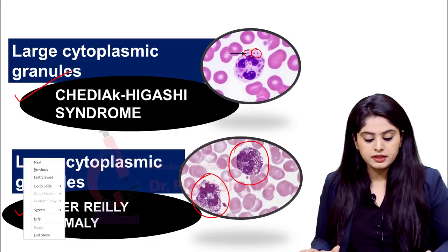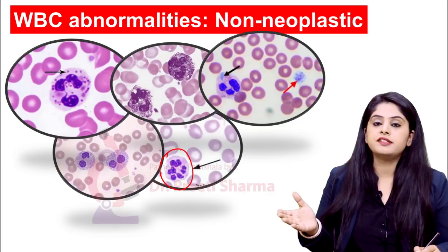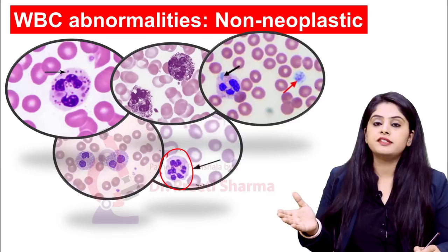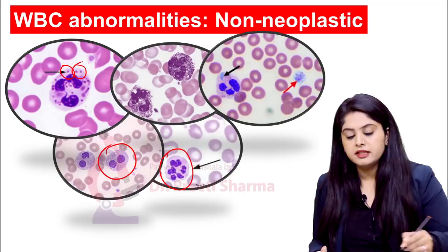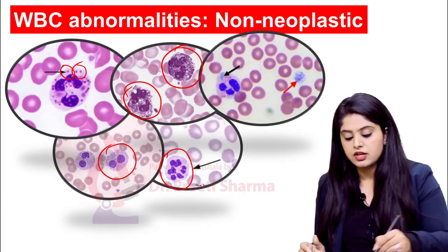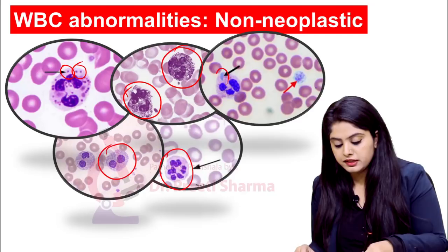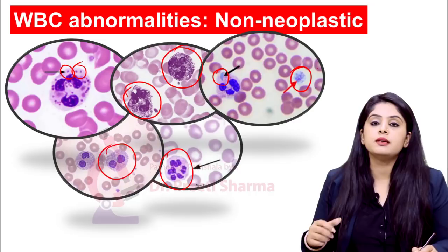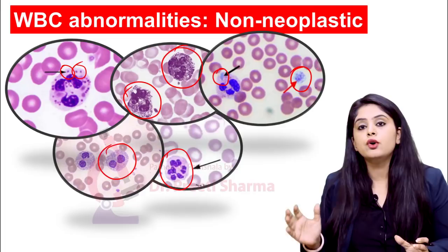These five anomalies are important and unfortunately many students tend to ignore them. Let us quickly recall: first — more of segments: hypersegmented neutrophil. Second — less of segments: hyposegmented neutrophil or Pelger-Huët anomaly. Third — large prominent cytoplasmic granules: Chédiak-Higashi. Fourth — granules covering the entire cell: Alder-Reilly anomaly. Fifth — an anomaly with inclusions, giant platelets, and low platelet count: May-Hegelin anomaly. These are all the non-tumorous or non-neoplastic WBC abnormalities you need to know.